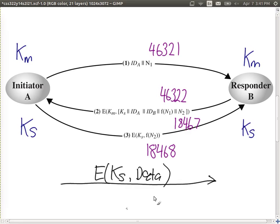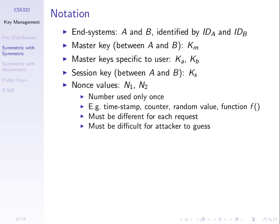The nonce value and the function applied to it are part of the protocol specification — both A and B, as well as the attacker, know the method (e.g., random number, timestamp, or increment). The attacker knows someone chose a random value, but because it's random, they cannot predict the next one. In the scheme described, what can the attacker do? If the attacker pretends to be A and sends message 1 to B with a chosen nonce value, B sends back a reply encrypted with KM. The attacker cannot decrypt it because they don't know the master key KM.